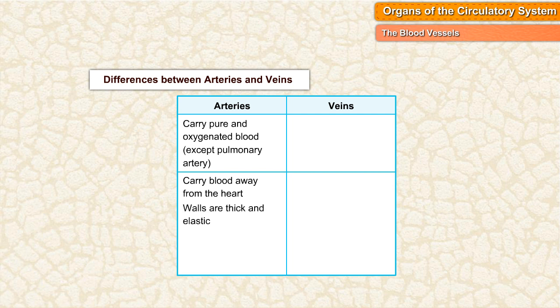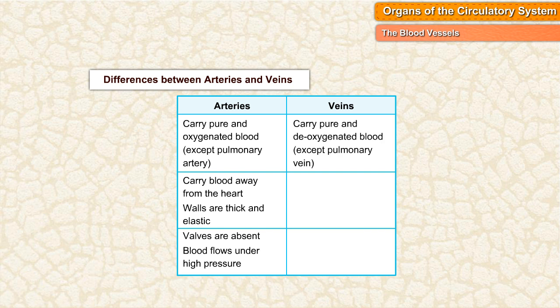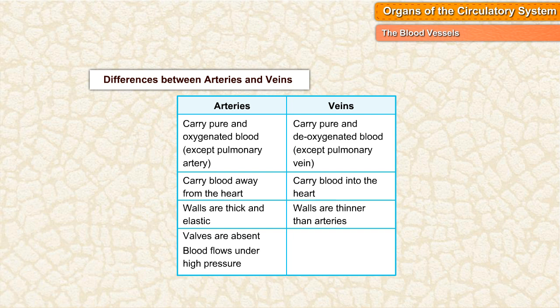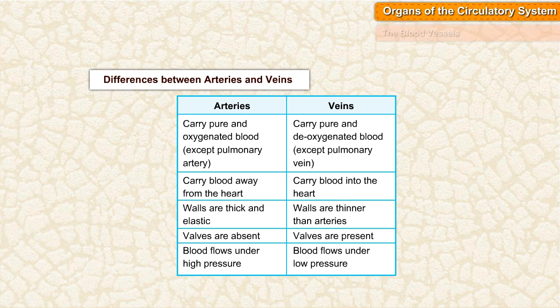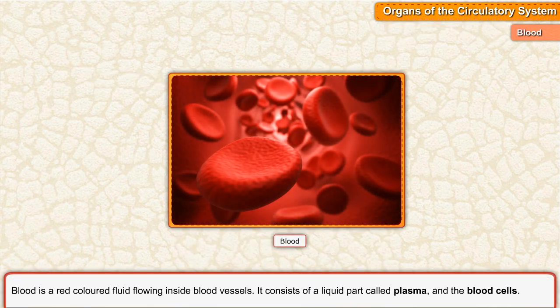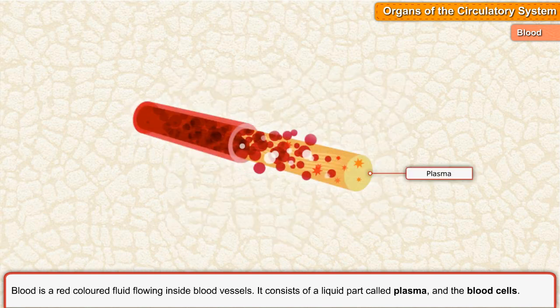Differences between arteries and veins: Arteries carry pure and oxygenated blood (except the pulmonary artery), carry blood away from the heart, have thick and elastic walls, have no valves, and blood flows under high pressure. Veins carry impure and deoxygenated blood (except the pulmonary vein), carry blood into the heart, have thinner walls, have valves present, and blood flows under low pressure.